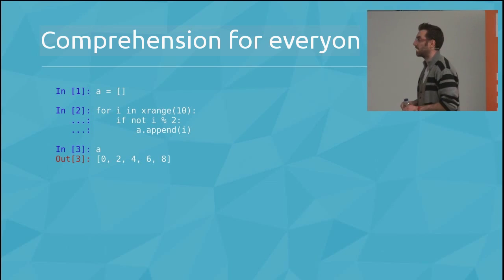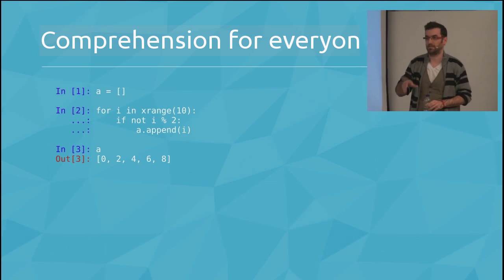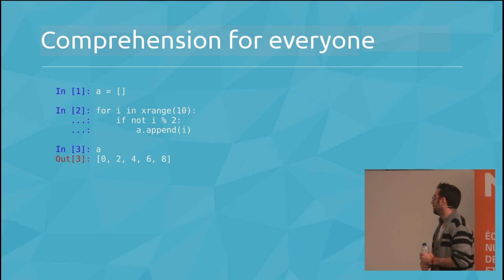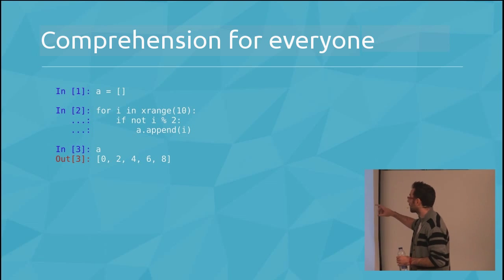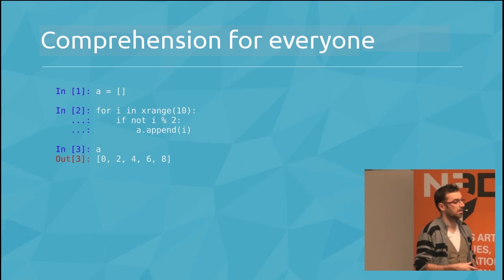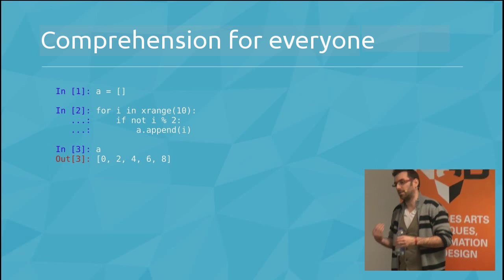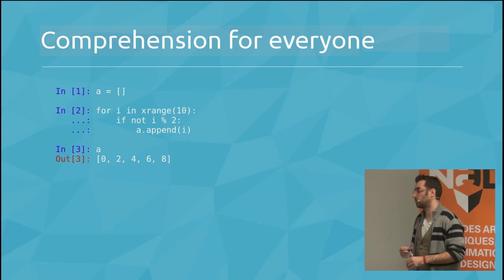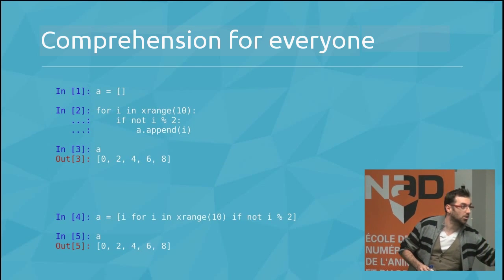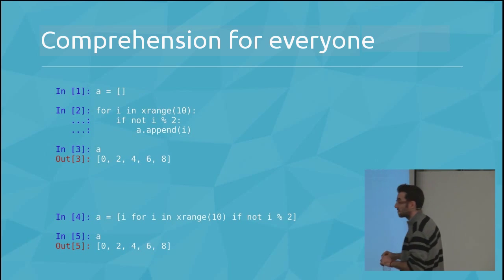Comprehension list, does that ring any bells? Yeah, that is a good way to minimize your code. So you can do it this way. So you have to declare a list, then three lines of code, and then call your list to know what's happening. What you can do, you can do it in one line, it's called comprehension list. It's one line, it's doing the same.